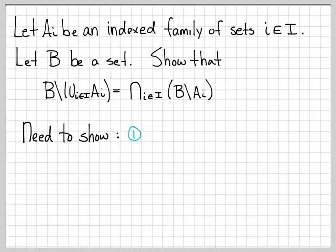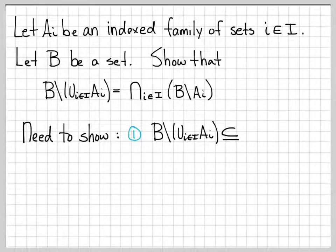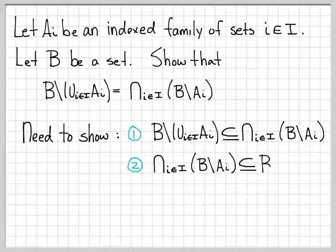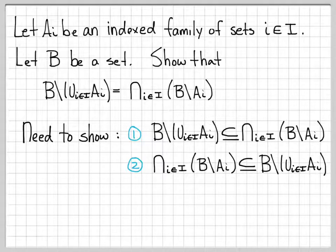In general, when we work with showing set equality, we show two things. We show first that one set is a subset of the other — so we would show that B diff the union is a subset of the intersection. Then we would show the second part, which is that the intersection is a subset of B diff the union. If we can establish both, that means these sets are equal because every element of the first set is in the second, and vice versa. This is the strategy we're going to use, and we'll show these one at a time.